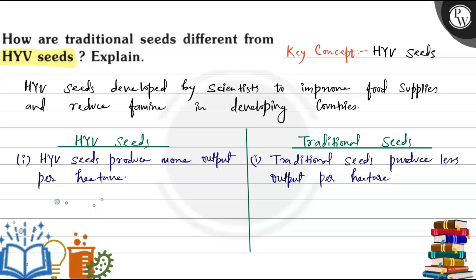Hello Bacho. In this question, we have been given: how are traditional seeds different from HYV seeds? Explain. The key concept here is HYV seeds, which were developed by scientists to improve food supplies and reduce famine in developing countries.